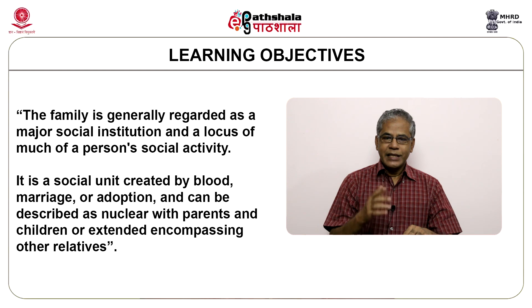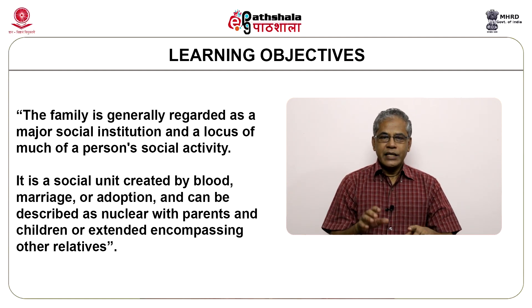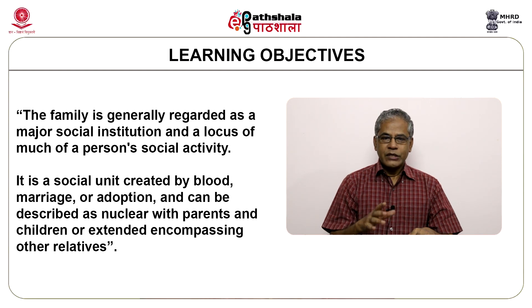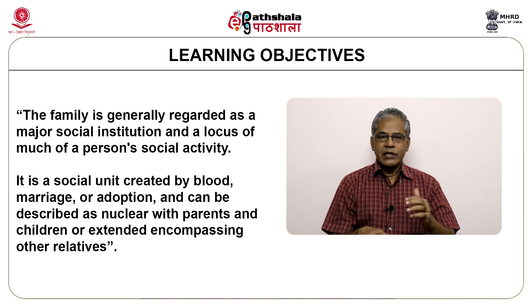This definition, which embodies the concept of the nuclear family, has been the most widely cited definition in the sociological literature of the family. Charles B. Naam in his book, The Concept of the Family: Demographic and Genealogical Perspectives, defines that the family is generally regarded as a major social institution and a locus of much of a person's social activity. It is a social unit created by blood, marriage or adoption and can be described as nuclear with parents and children, or extended encompassing other relatives. These definitions acknowledge the relationship and the bond among the individuals in the family and the different roles they play in the unit.